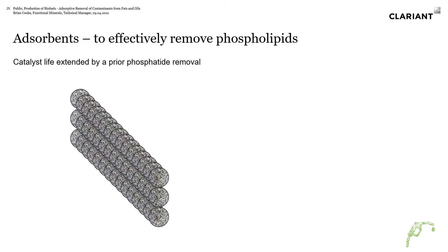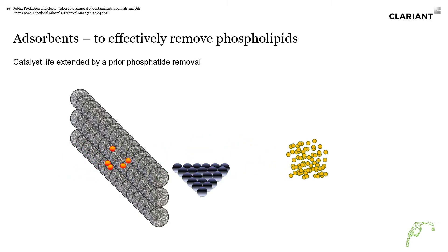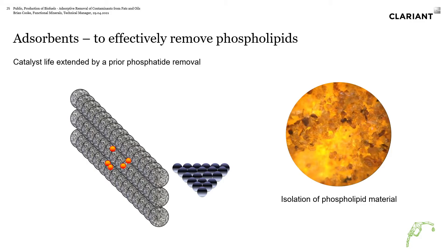Here is a diagram showing the filter cake formed on the filter with the bleaching clay. You have your oil with the phosphorus going through, hitting the filter cake, and the phosphorus is left behind so it never reaches the catalyst. On the right there is a picture of what this isolated phospholipid material looks like when it's trapped on the filter cake.